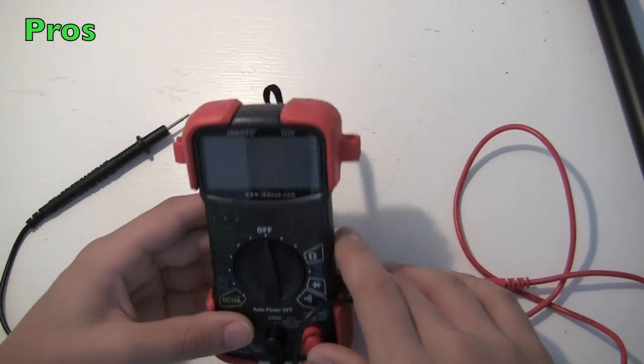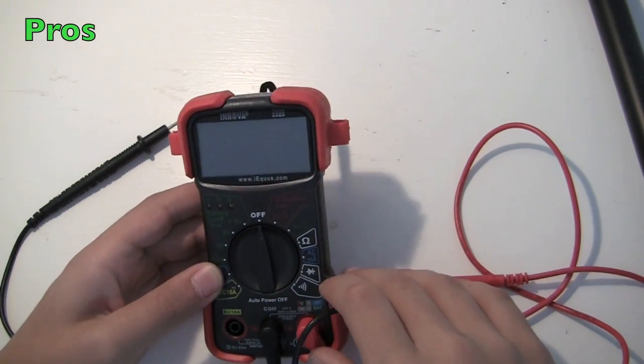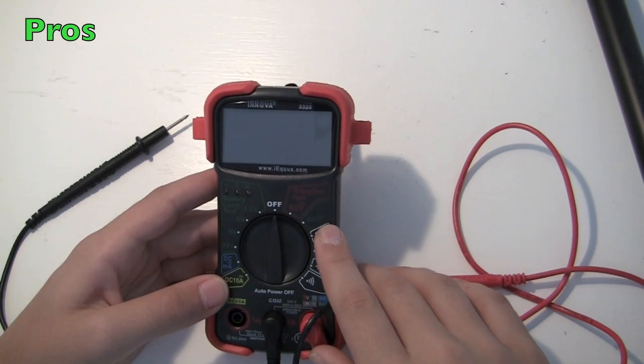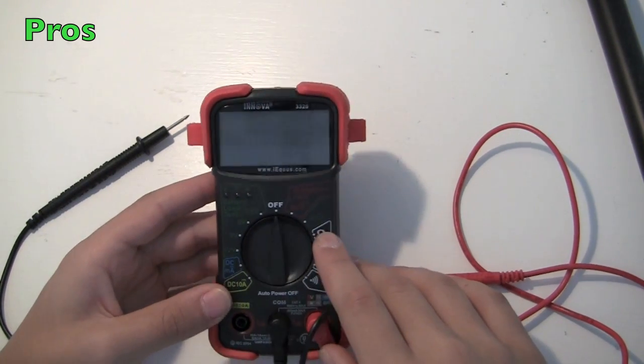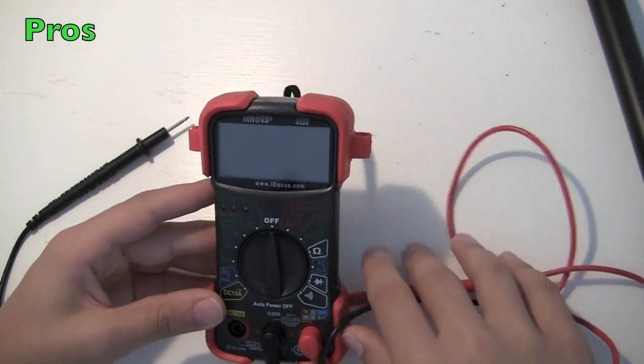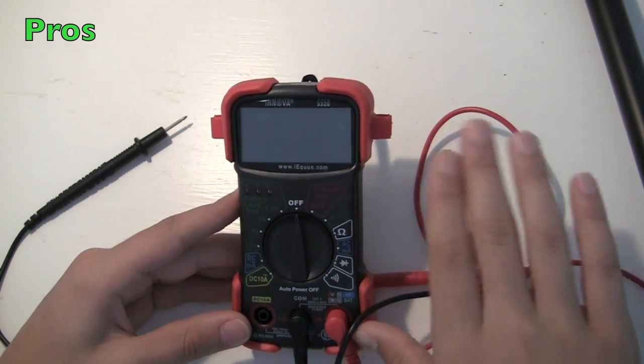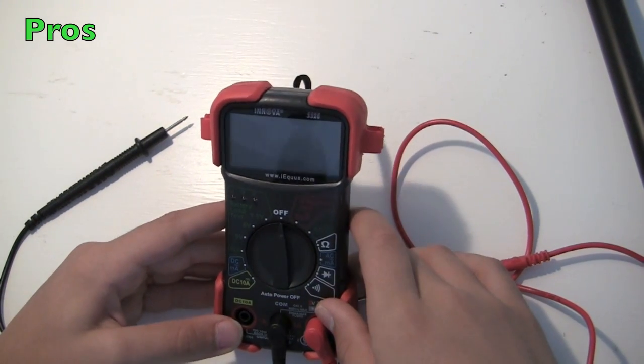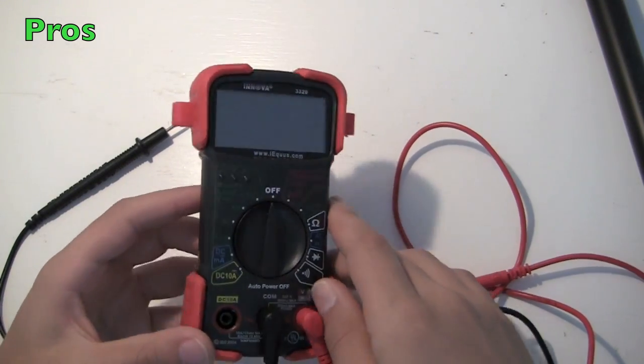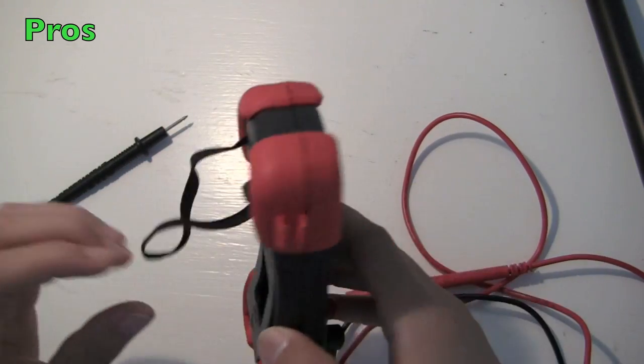Okay, so this is one of the cheaper of the auto-ranging multimeters out there. I think it's around $20, maybe a little higher than that. But it's a lot cheaper than all the other auto-ranging multimeters. They're more like $50. So for the price, I think that this multimeter is great. $20 for an auto-ranging multimeter.